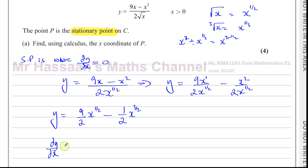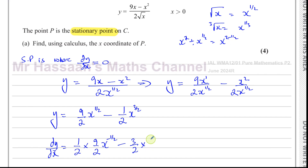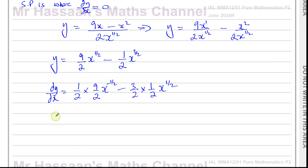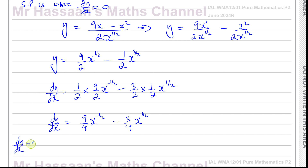When we differentiate, we multiply by the power. So a half times 9 over 2 gives x to the power of a half minus 1, which is negative a half. And 3 over 2 times a half gives x to the power of 3 over 2 minus 1, which is a half. Simplifying, dy/dx equals 9 over 4 times x to the power of negative a half, minus 3 over 4 times x to the power of a half.